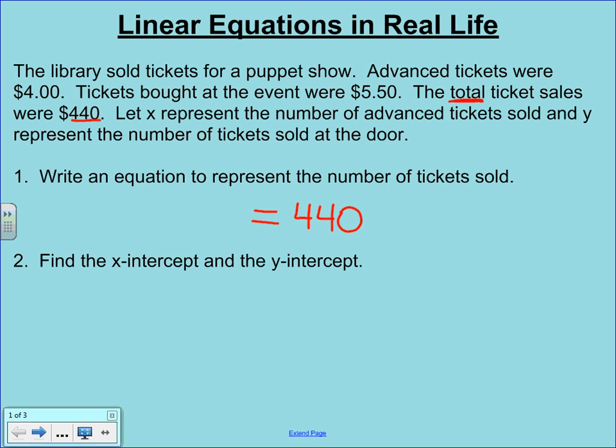Now we made that money by selling tickets. We sold advanced tickets for $4. We don't know how many we sold, but we're going to call advanced tickets X. So I'm going to say 4X is going to give me the amount of money that we're bringing in from the advanced ticket sales.